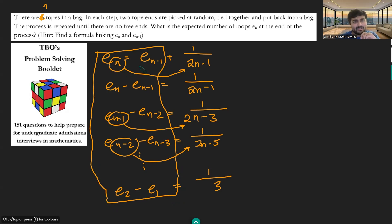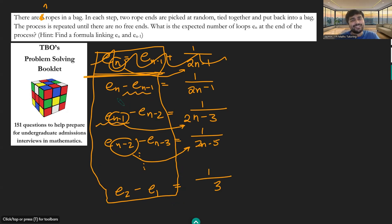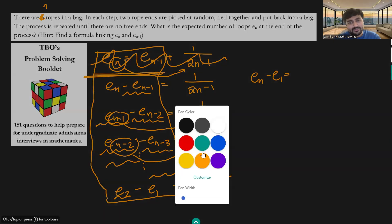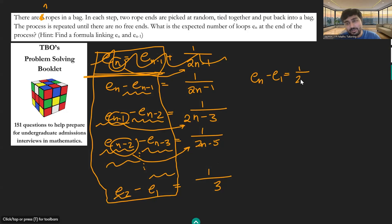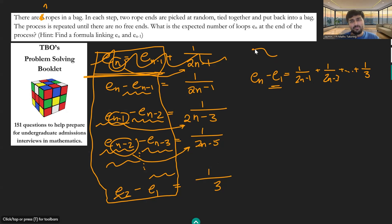The left-hand side now becomes a huge telescoping sum. When we add all the equations together, the minus En minus 1 cancels with the positive En minus 1, the minus En minus 2 cancels with the positive En minus 2, and so on. Adding all the left-hand sides gives us En minus E1, which equals the sum of the right-hand sides: 1 over 2n minus 1 plus 1 over 2n minus 3, and so on, up to 1 over 3. Since E1 equals 1 — starting with one strand always gives one loop — we bring that to the other side.